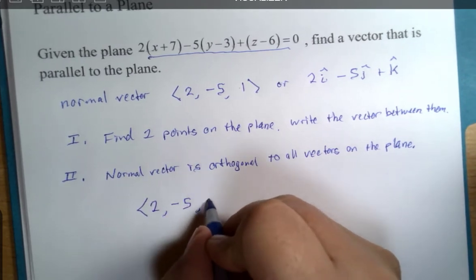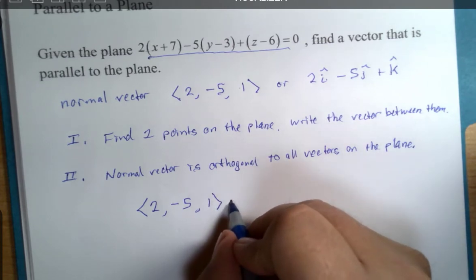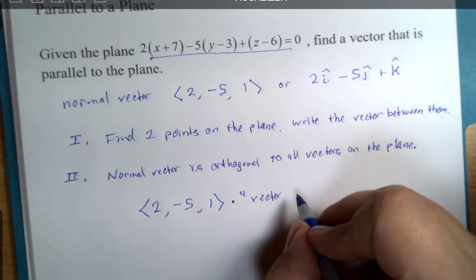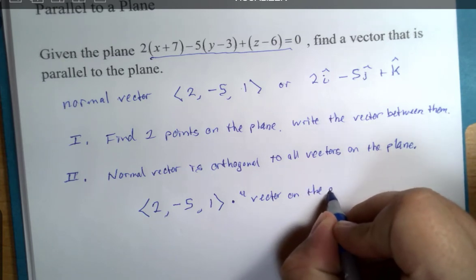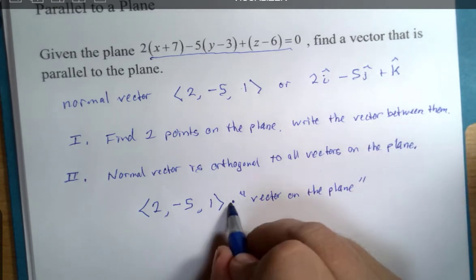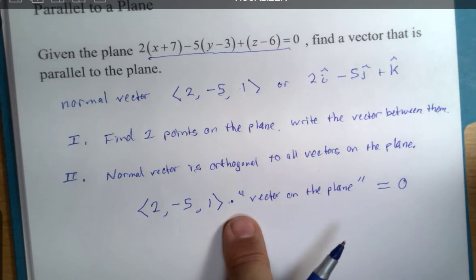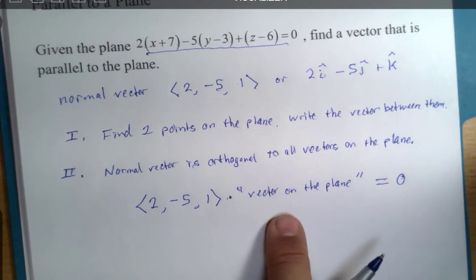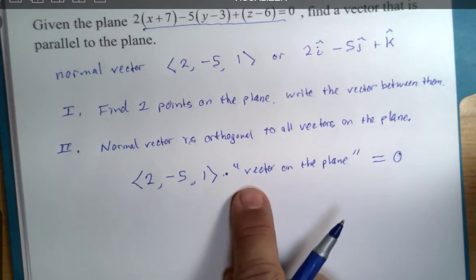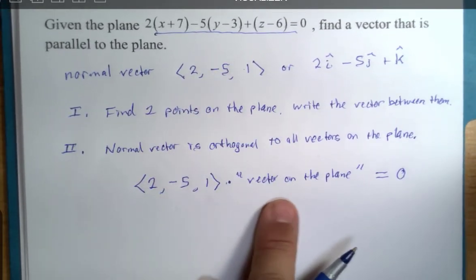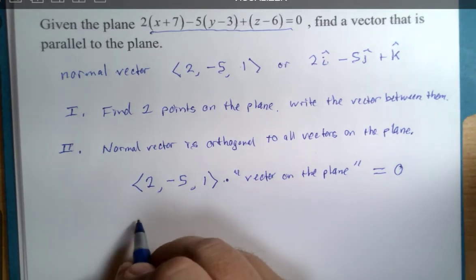In this case, if my normal vector is two, negative five, one, and I put here a vector on the plane, their dot product would be zero. Their dot product would be zero. That's the part of the cosine of theta formula that is sufficient to show if two vectors would make a 90 degree angle if they were starting from the same point. So, maybe we could sort of, instead of guessing a second set of coordinates on our given plane, maybe this will be mathematically a little bit less work.